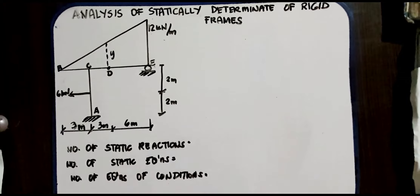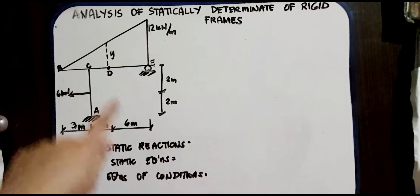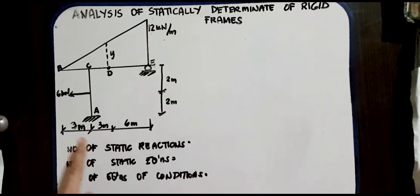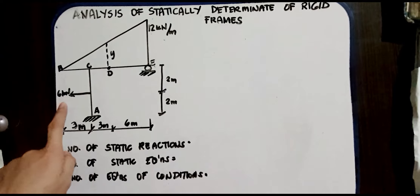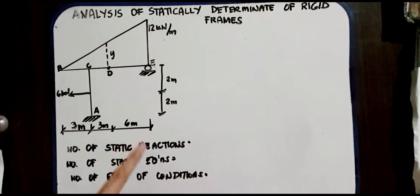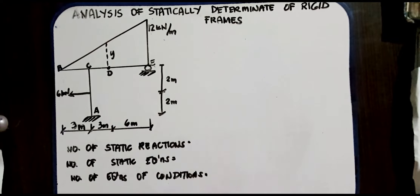Today's topic is analysis of statically determinate rigid frames. We have triangular loads of 12 kN/m, a horizontal load of 6 kN, distances of 3, 3, and 6 meters, and also 2 and 2 meters. The structure has points A, B, C, D, and E.